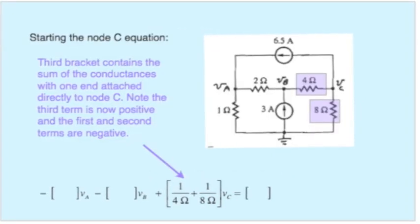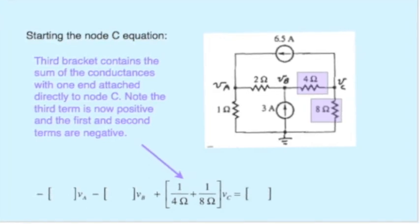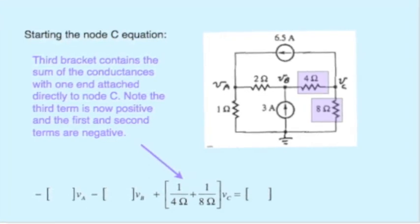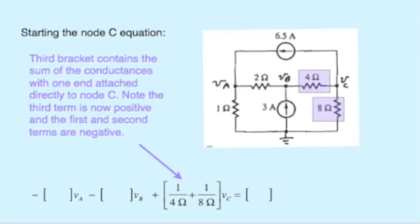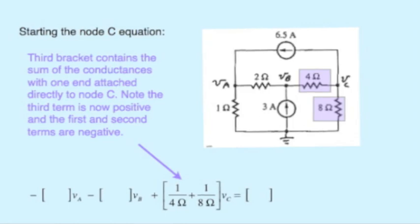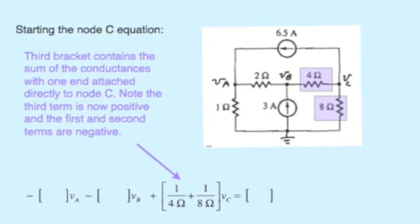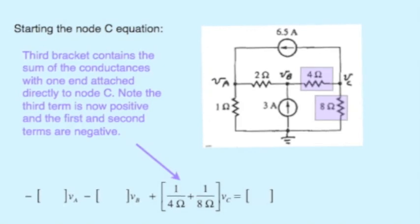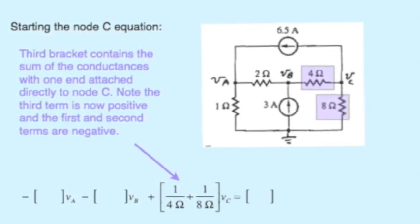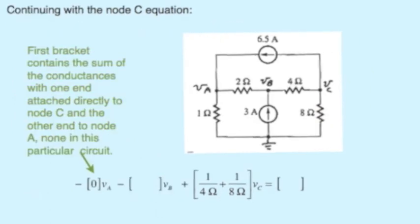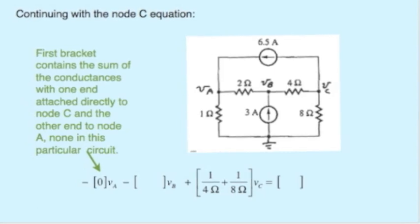And now turning our attention finally to node C. In terms of the signs, what multiplies V sub C is positive. What multiplies V sub A and V sub B are negative. The term in front of V sub C comes from all the resistors that have one end directly connected to node C. That's the 4 ohm resistor and the 8 ohm resistor. And next we look for resistors that have one end on node A and the other end on node C.